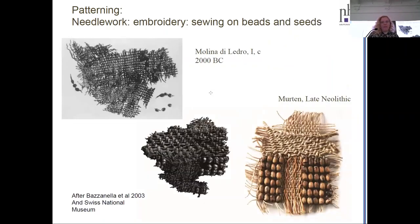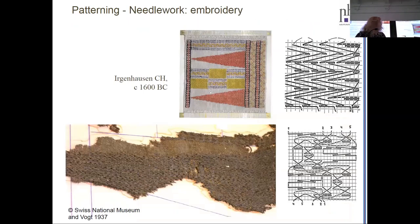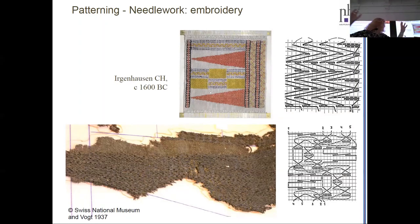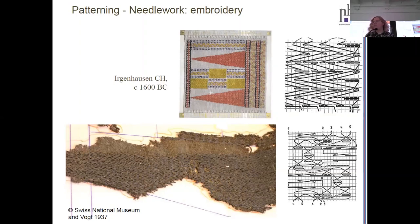What we also have is needlework in different kinds: embroidery, sewn-on beads and seeds from the Late Neolithic, and elaborated needlework. This piece is from Feffikon Irgenhausen, around 1600 BC — we've also plotted it with the detailed C14 date. This is really singular. It's one crazy item — we don't have anything comparable to it anywhere.